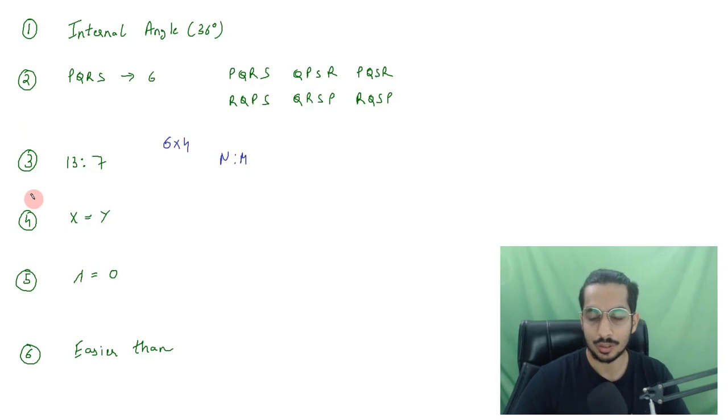Then, there was a question that was based on certain operations were given to us and they had asked what will be the value of X. The X value was coming out to be equal to Y. Then, there was again a question based on operations where they had asked the value of Lambda. When we applied that operation to find out the value of Lambda, it was coming out to be 0.